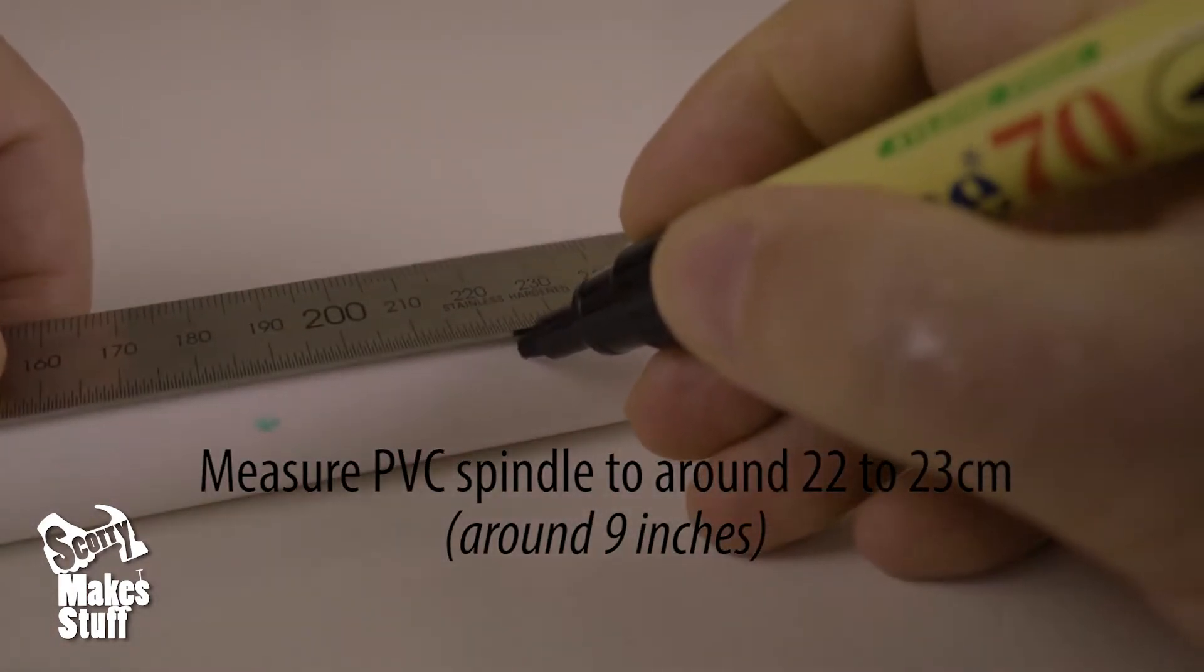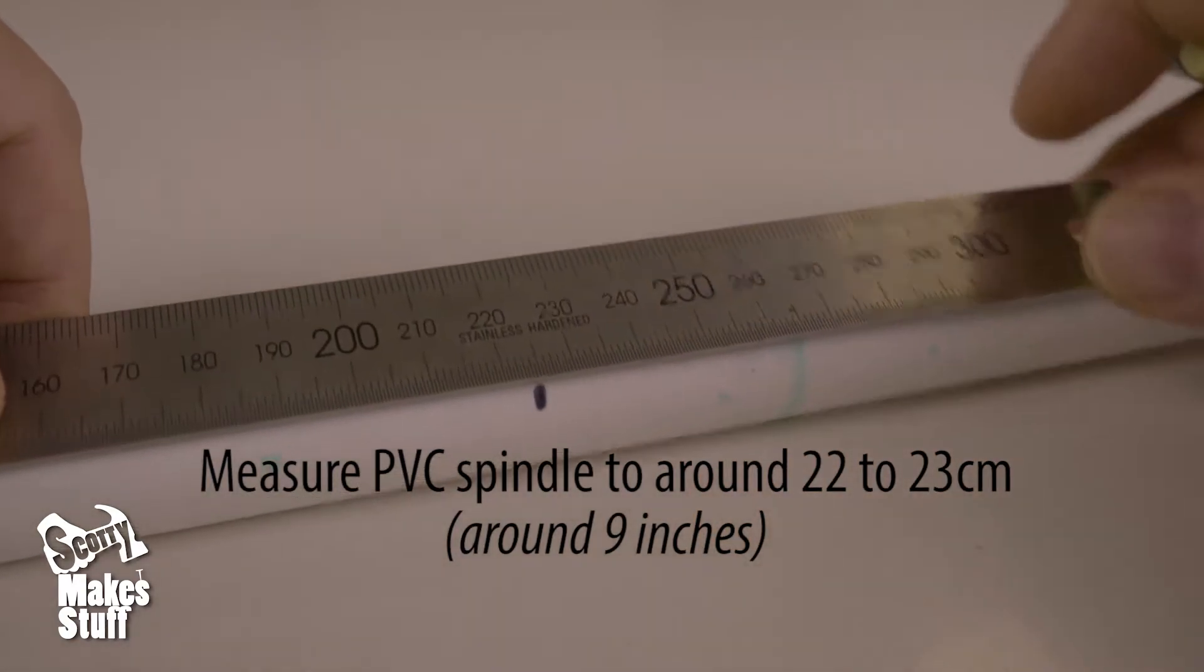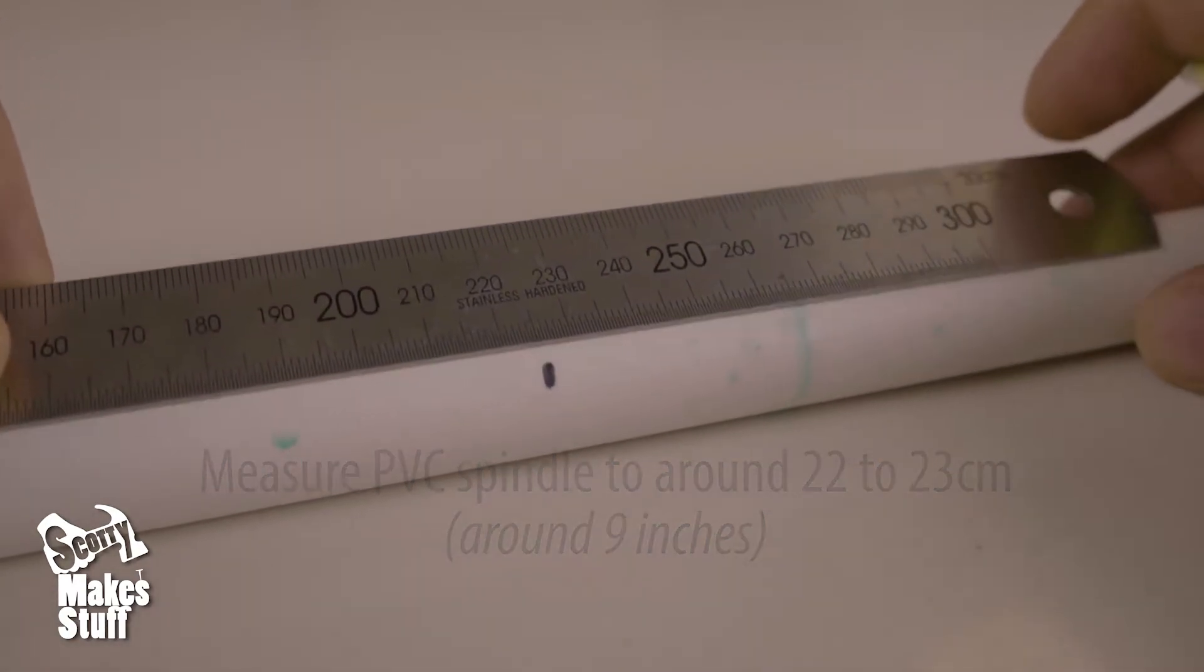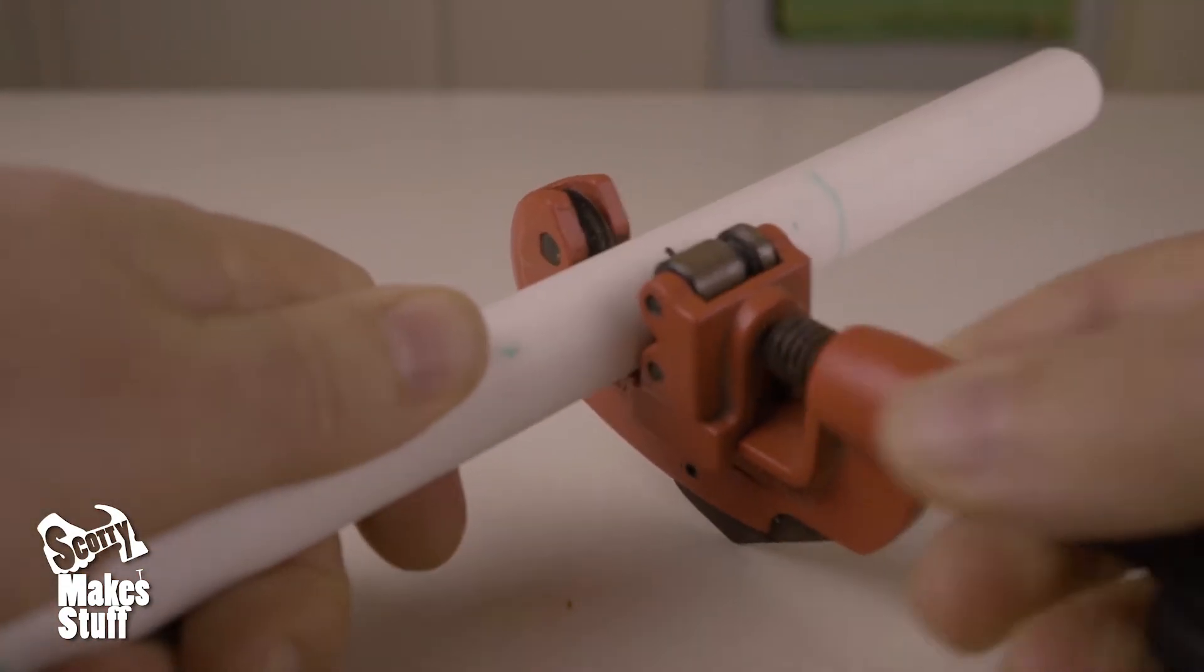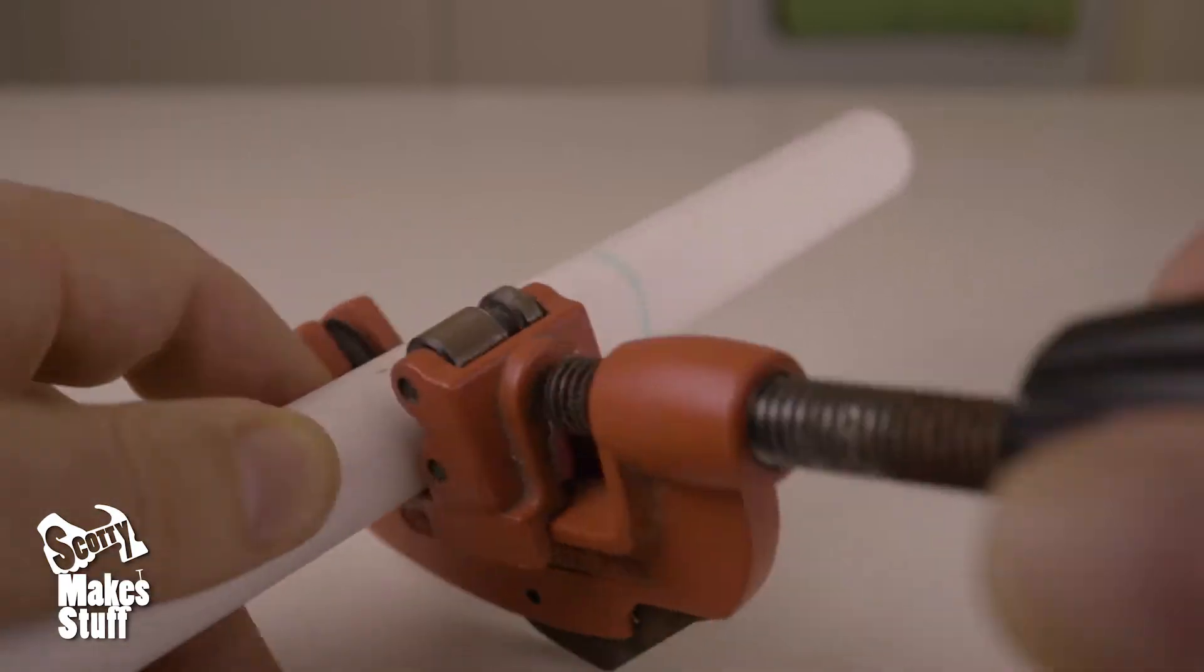I cut my spindle at 22 and a half centimeters. I use a pipe cutter because it's very neat but pruning secateurs or a hacksaw will also do the job.